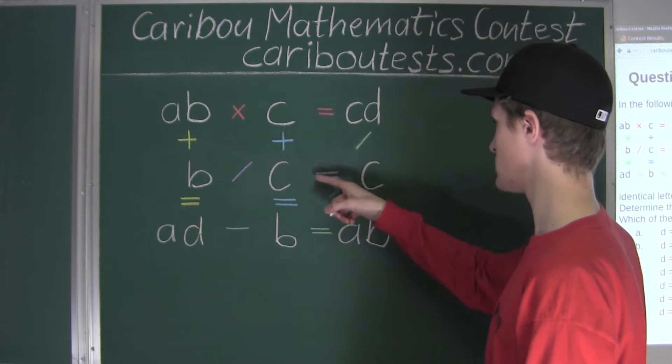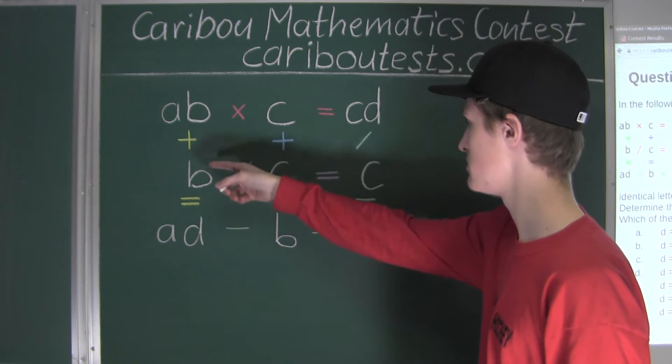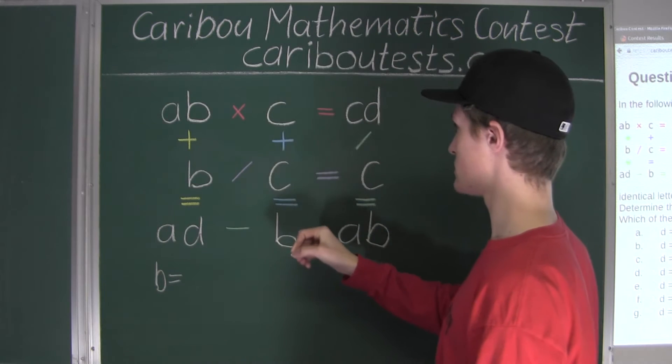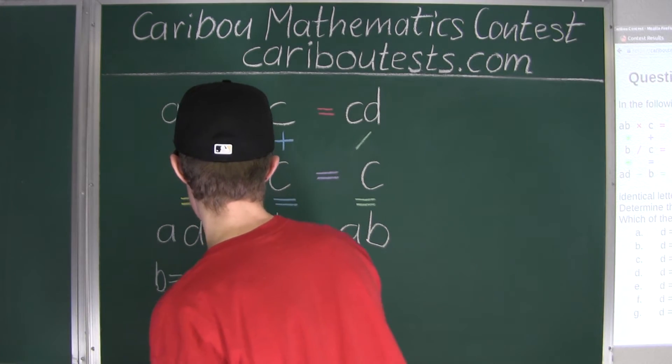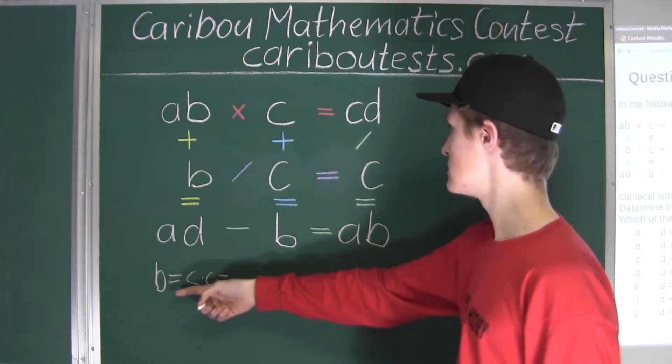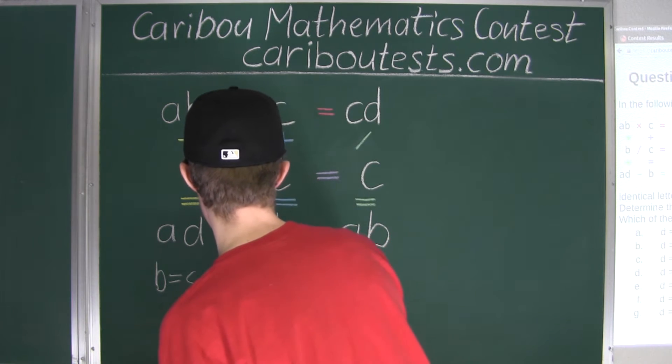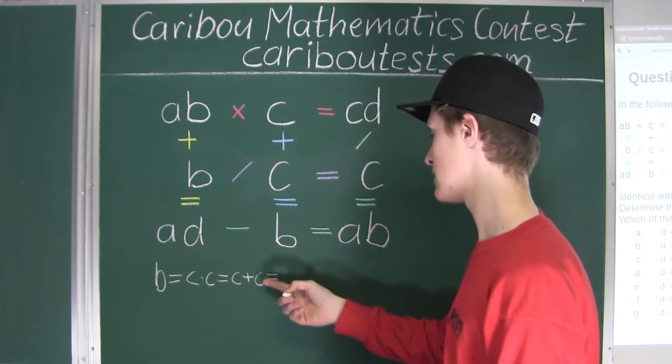So B divided by C is equal to C, we can also write that as C times C is equal to B. So B is equal to C times C. But we also know that B is equal to C plus C.